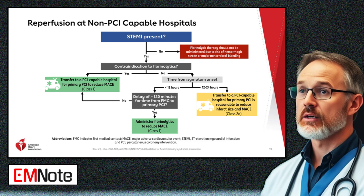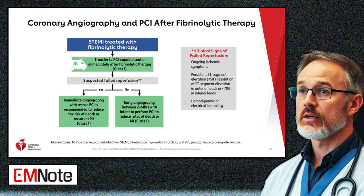Reperfusion strategies at non-PCI-capable hospitals: Fibrinolytics are administered within 12 hours of symptom onset for ST elevation myocardial infarction if percutaneous coronary intervention delays exceed 120 minutes. Transfer to PCI-capable centers is recommended for failed reperfusion. Early angiography within 2 to 24 hours with intent to perform PCI reduces death or myocardial infarction rates. Immediate rescue PCI is indicated for failed reperfusion.